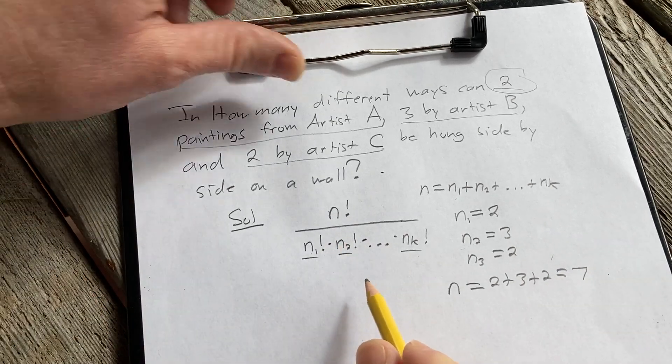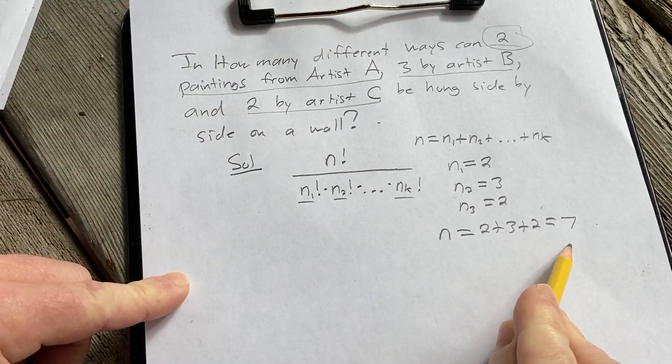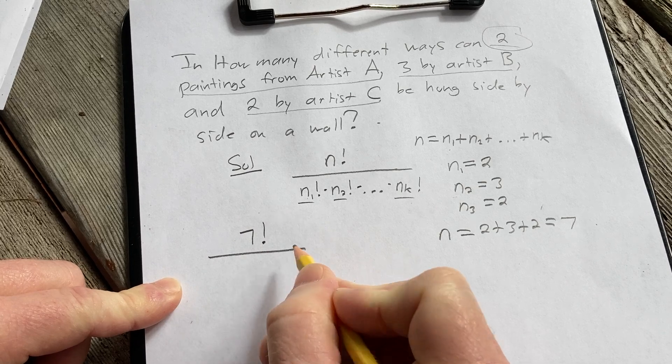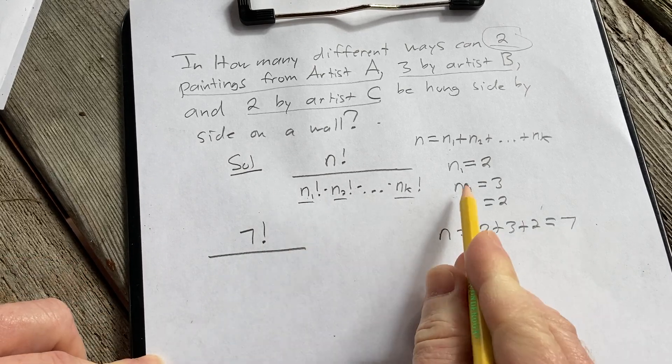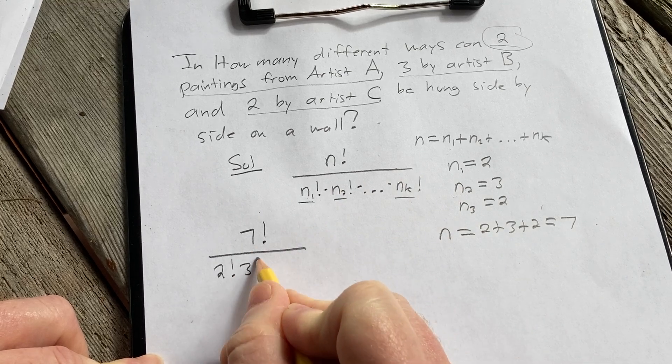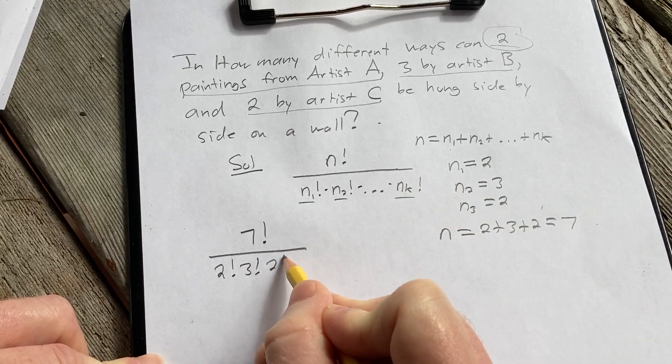So filling in the formula here, we're simply going to have 7 factorial in the numerator. I'll write it over here, over. And then we have n1 which we said was 2 factorial, n sub 2 which is 3 factorial, and then n sub 3 which is 2 factorial.